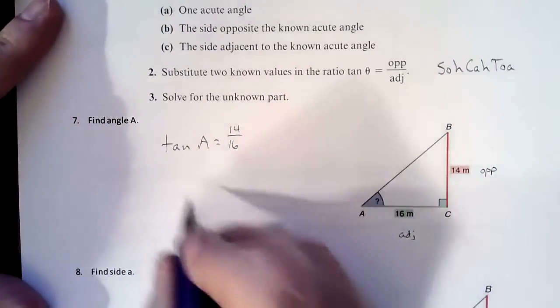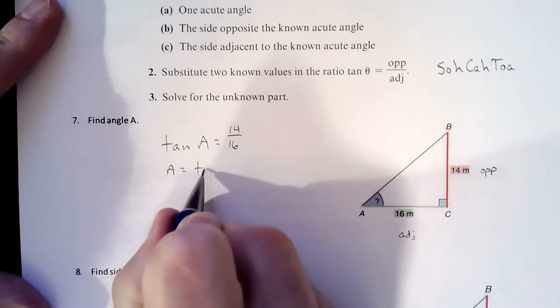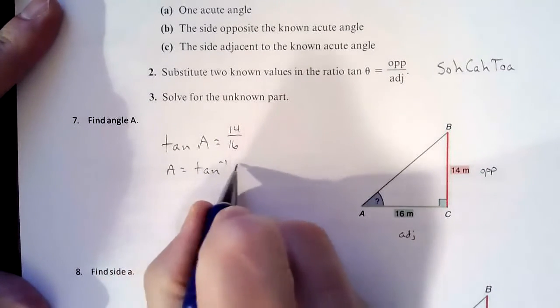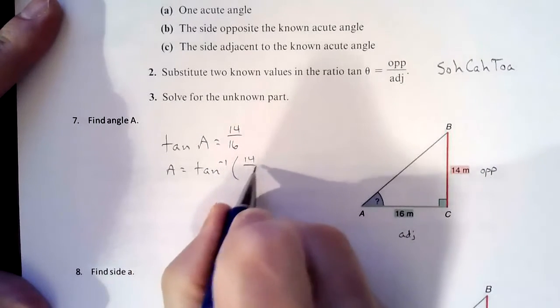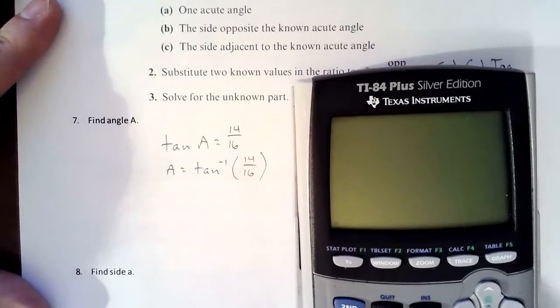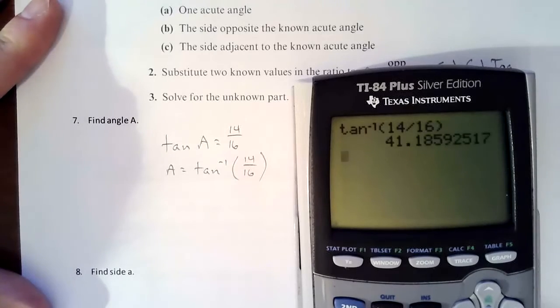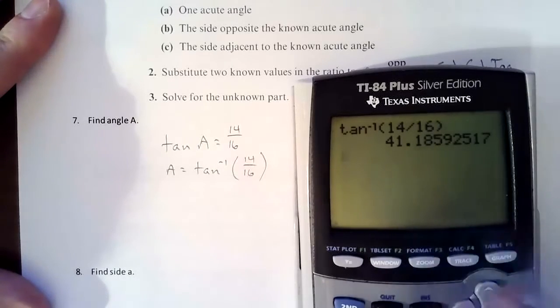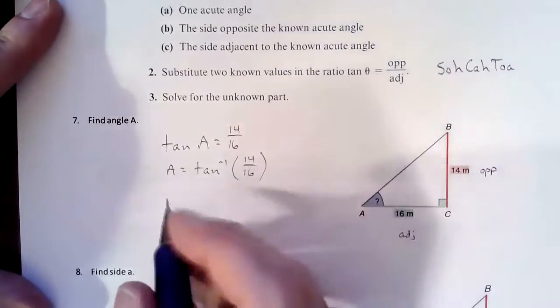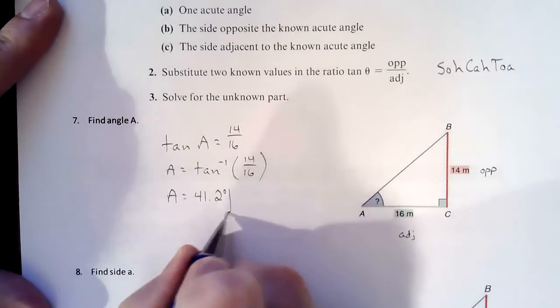So then we're going to try and solve our equation from there. The only way you can find an angle that's missing is to do the inverse tangent of that. So we're going to do inverse tangent of 14 divided by 16, and that's going to get us 41.2 degrees. So that would be our angle, 41.2 degrees.